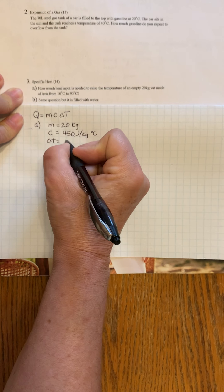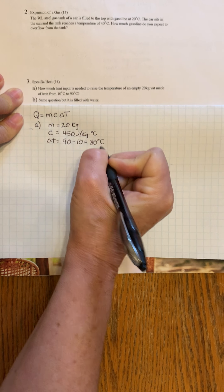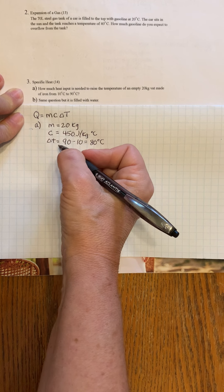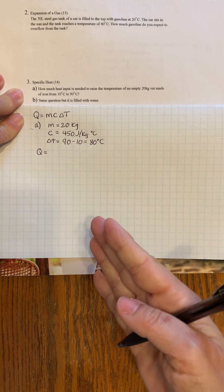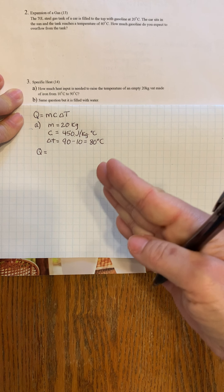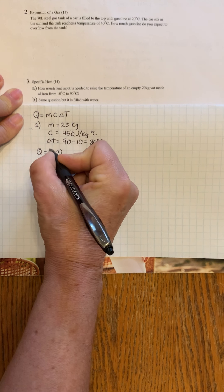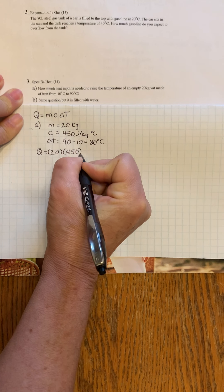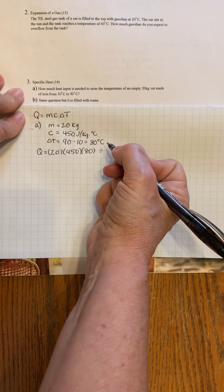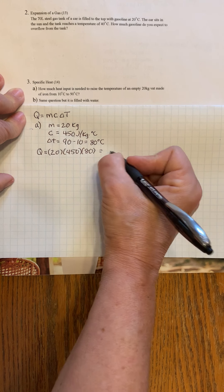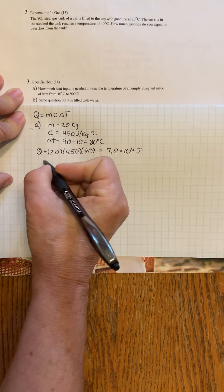We are looking for Q. We have a mass of 20 kilograms. Specific heat for iron is 450 joules per kilogram degrees Celsius. The change in temperature is going to be from 10 to 90, so 90 minus 10, final minus initial, is 80 degrees Celsius. Q, the amount of heat energy you need to raise that 20 kilograms from 10 to 90 degrees is 20 times 450 times 80. That will be 7.2 times 10⁵ joules.